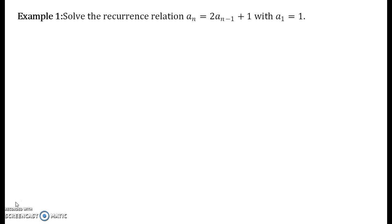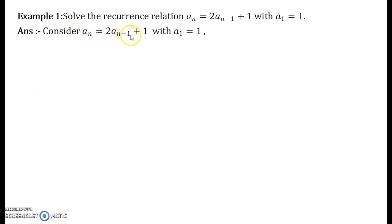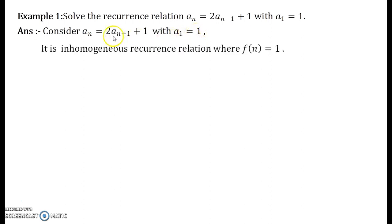Consider the recurrence relation: a_n equals 2·a_{n-1} plus 1, with initial condition a_1 equals 1. This is an inhomogeneous recurrence relation, and you can see that the function f(n) equals 1 — this is the function f of n.